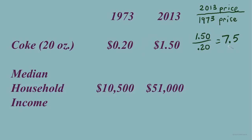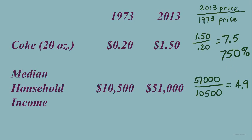We can look at this number as a percent: 7.5 is 750%, so the price of Coke has increased by 750%. Comparing how the median household income in the United States has increased in these two years, the fraction equals about 4.9, or an increase of about 490%.